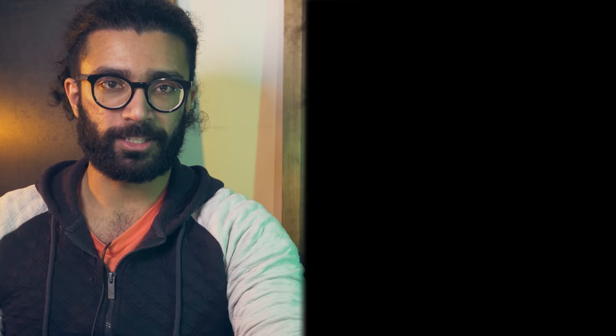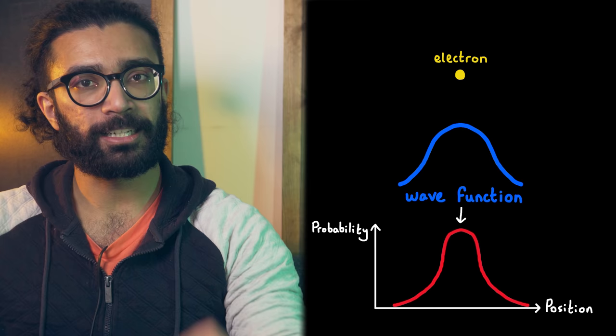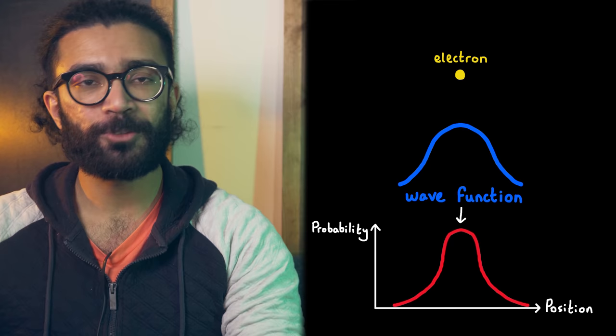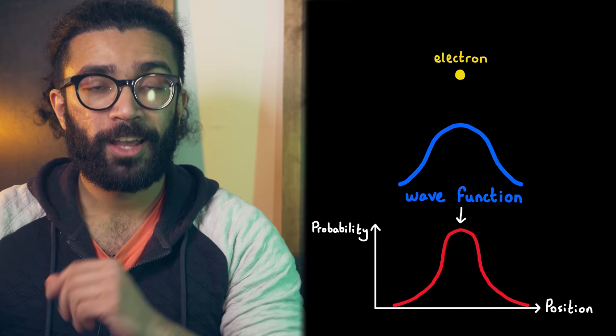First things first, let's start by understanding that any quantum system that we want to study can be described by a wave function. For our purposes, this wave function is just a mathematical function that contains all the information about our system. Say our system is a single electron — the wave function can tell us the probability that we will find this electron in different locations or positions in space. I've discussed this in more detail in other videos, so check out my quantum mechanics playlist if you're interested.